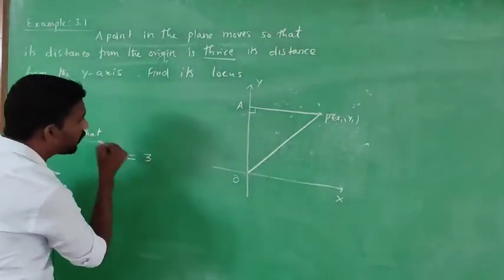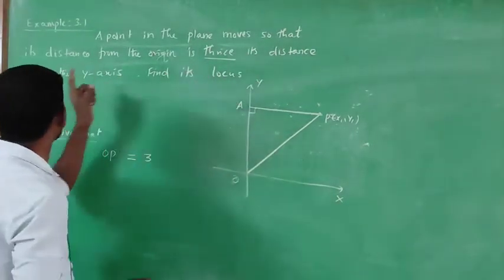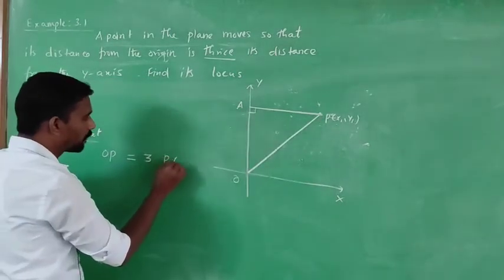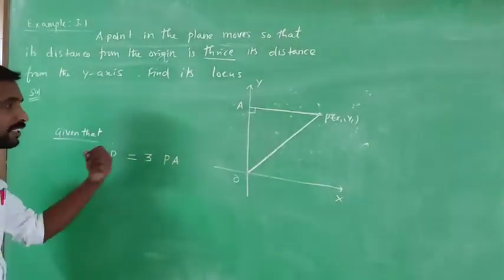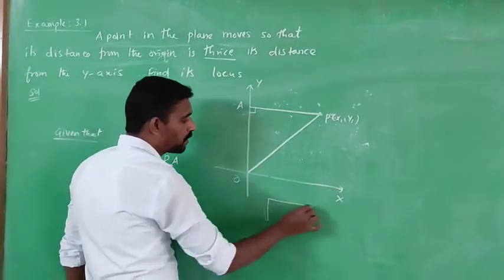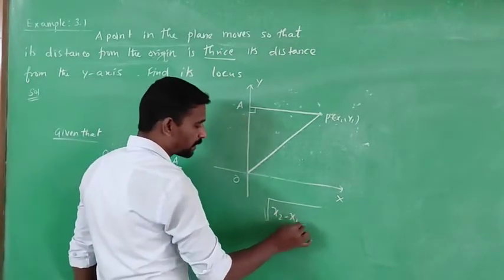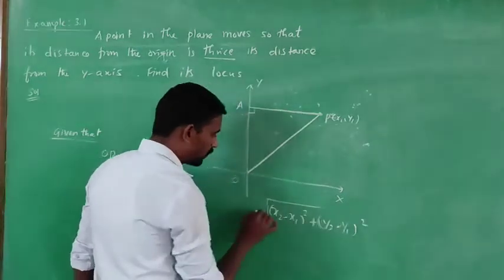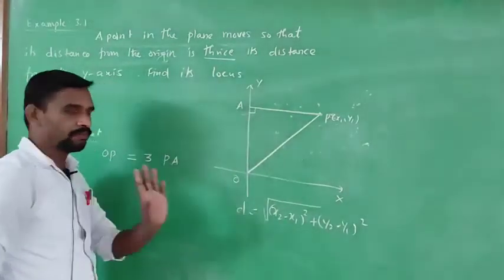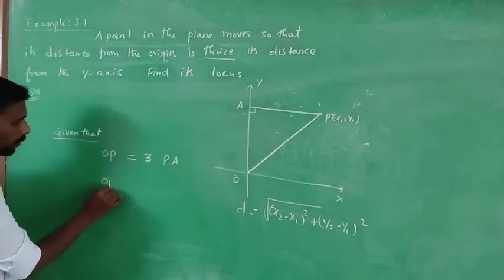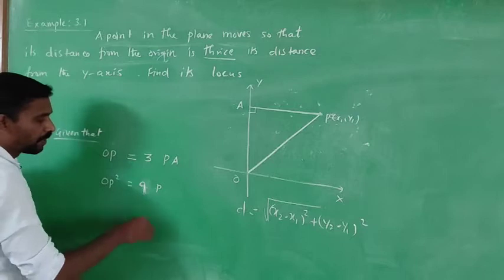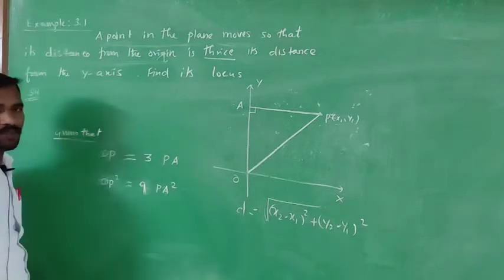The distance from point P to point A, using the distance formula: square root of (x2 - x1)² + (y2 - y1)². If we want to square both sides, OP² equals 3², which is 9, so 9 times PA².